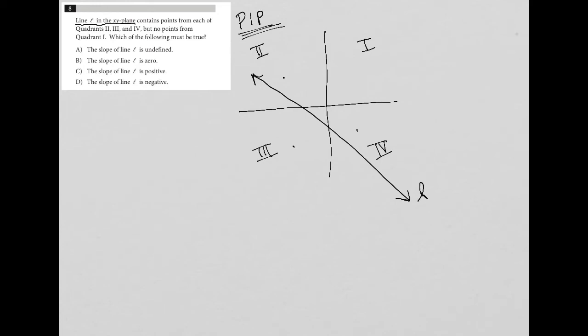Which of the following must be true? So answer choice A, the slope of line L is undefined. Well, an undefined slope is a vertical line, and there's no way you can have a vertical line, so that's out. Choice B, the slope of line L is 0. Well, the slope of 0 is a horizontal line.